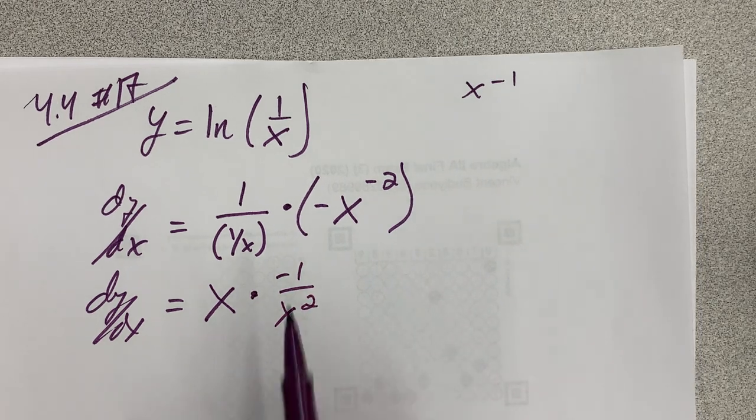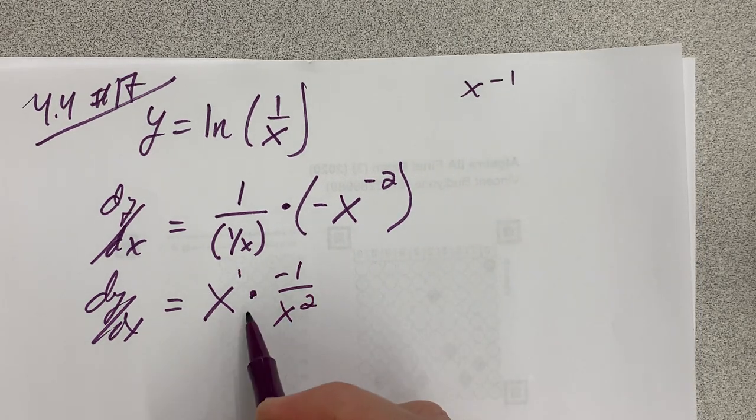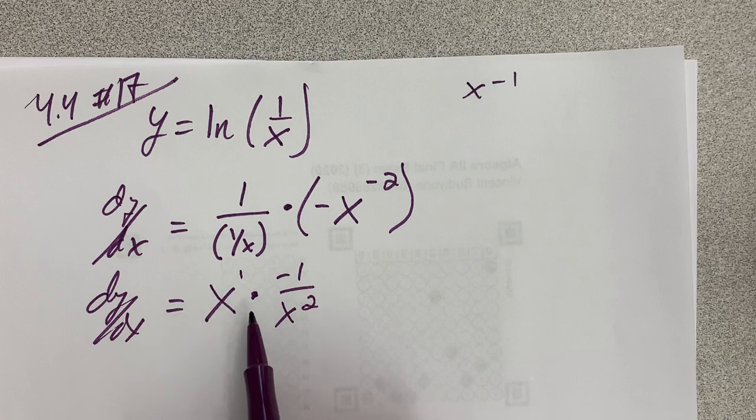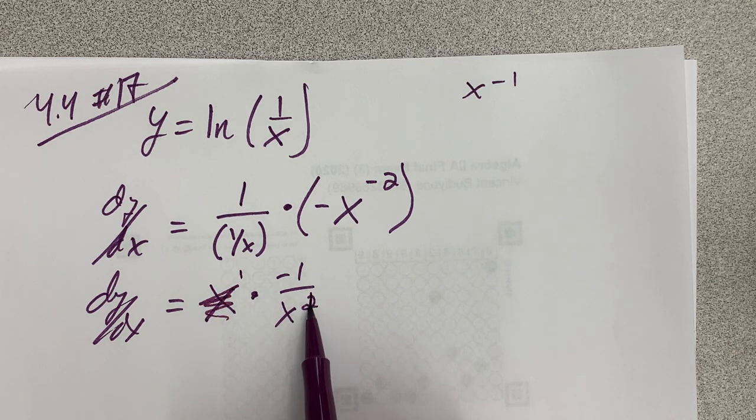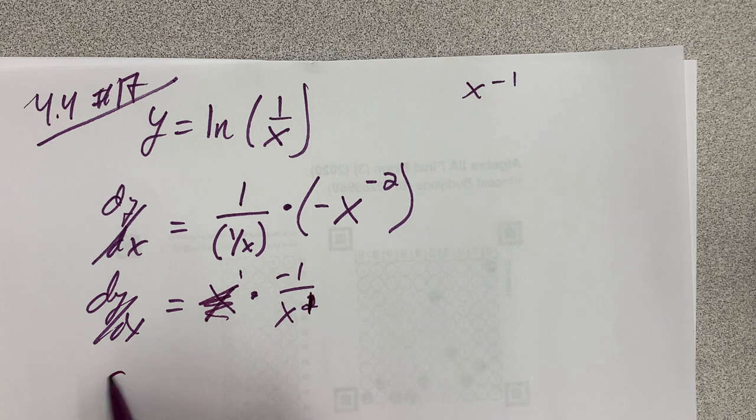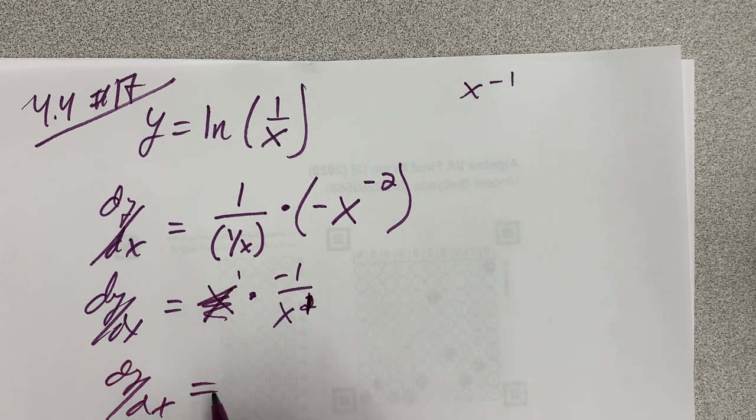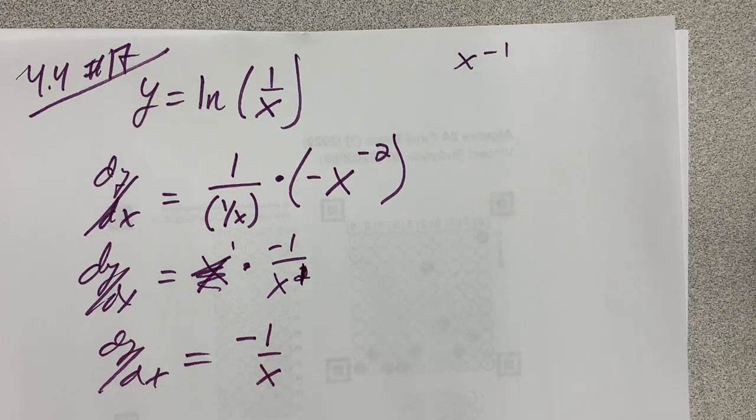And so since we have x times negative 1 over x squared, one of the x's in the numerator and one in the denominator will simplify to 1, and so I get negative 1 over x. Mm-hmm, I like that, yeah.